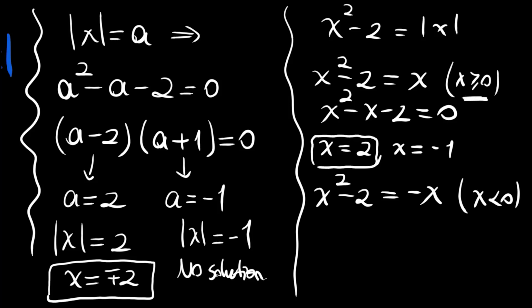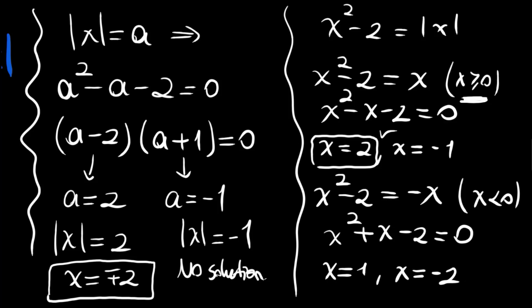For the case where x is negative, x squared minus 2 equals minus x, giving x squared plus x minus 2 equals 0. The roots are x equals 1 and x equals minus 2. Since x must be negative here, only x equals minus 2 is valid. Again we find x equals 2 or x equals minus 2.